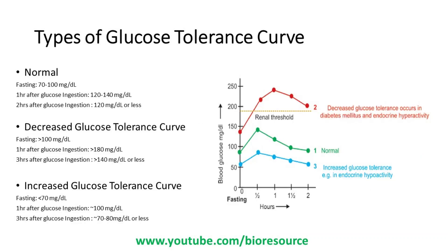The curve can be a normal, decreased glucose tolerance curve, or increased glucose tolerance curve. In normal cases, the fasting sugar will be in the range of 70 to 100 mg per deciliter. After one hour of ingestion with 75 grams of glucose, the blood sugar will rise to 120 to 140 mg per deciliter. After two hours of glucose ingestion, the values will come down to near normal state, that is 120 mg per deciliter or less.